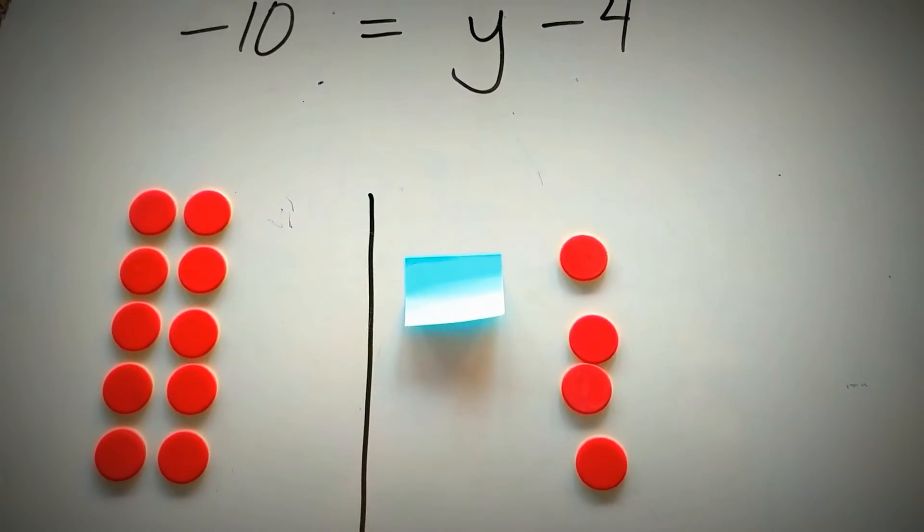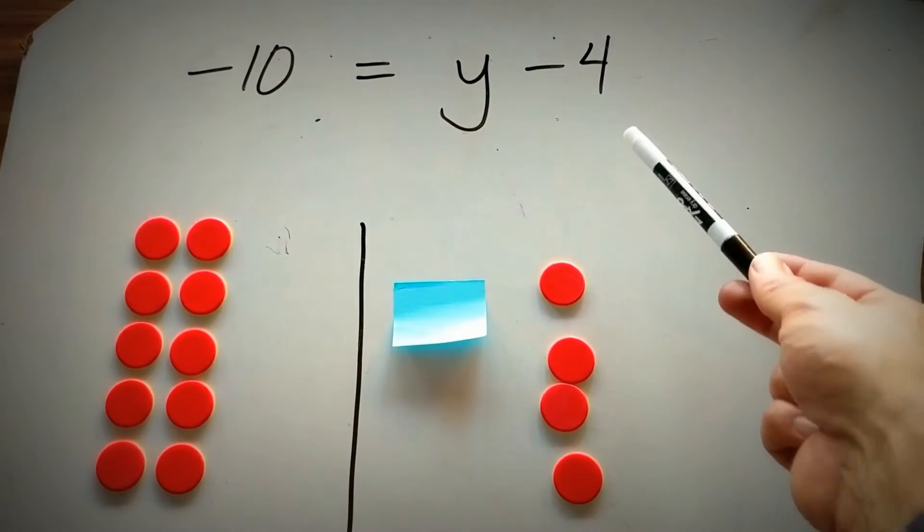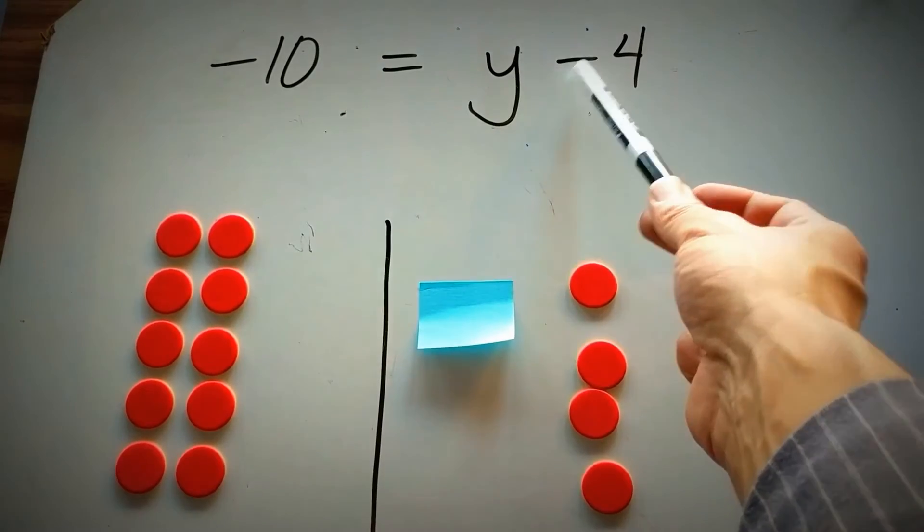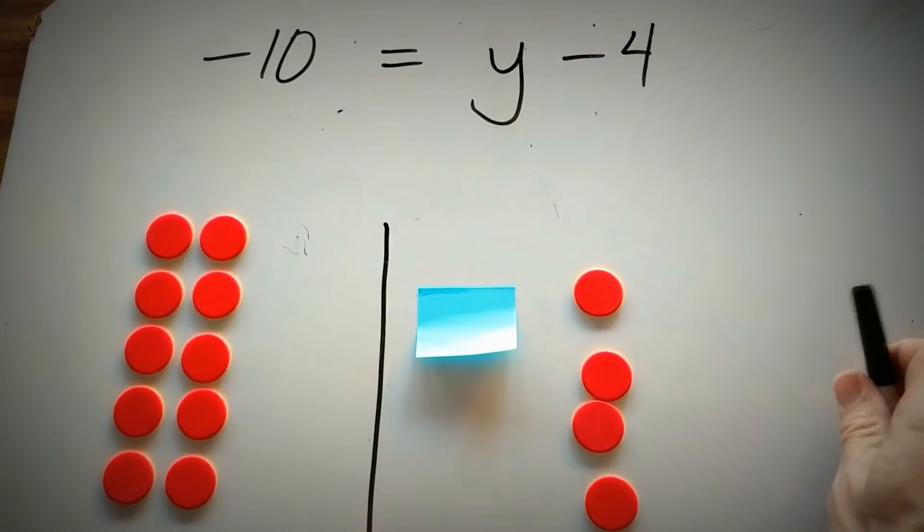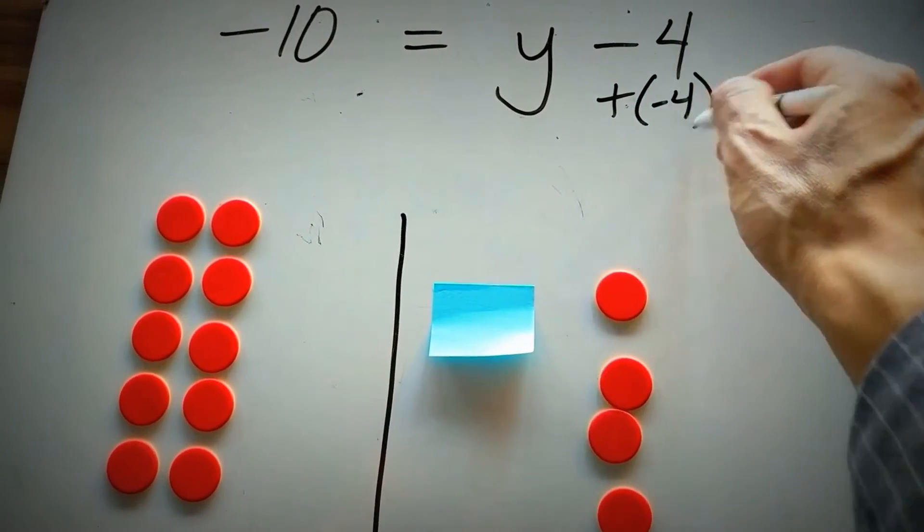Again, I have this set up where the post-it will represent y, the variable. I have negative 4 here. Now, you may be seeing this as subtract 4. I could rewrite this as plus a negative 4, and it represents the same thing.